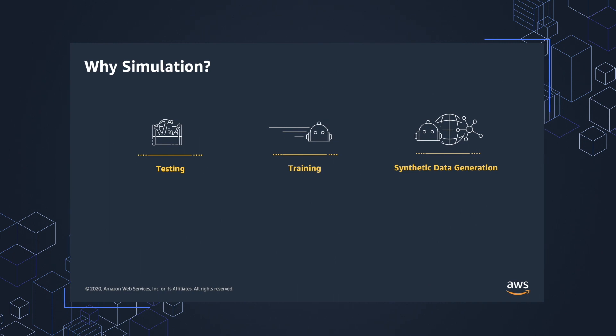Why simulation? Simulation is a powerful tool to speed up development and improve the quality of robotics applications. The following scenarios are a few in which simulation can play a vital role. The first one is testing. Simulations enable you to test robots in a multitude of environments and scenarios. Having the ability to test in different scenarios, changing the parameters and environments, enables you to test your application more robustly, thereby having higher confidence when you deploy the application on a real robot.